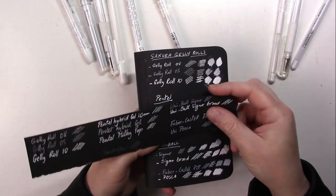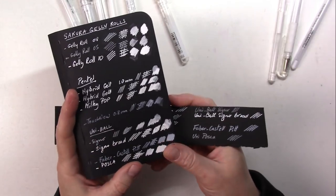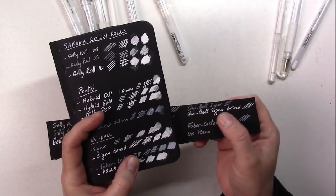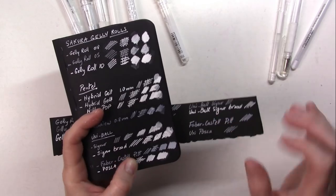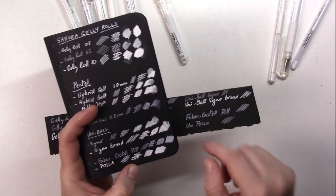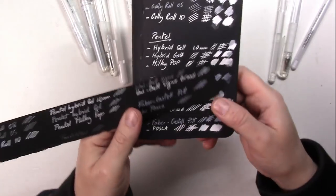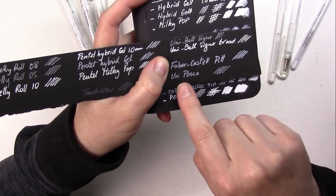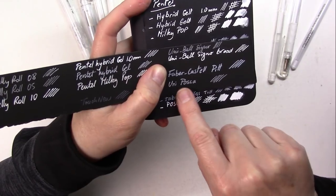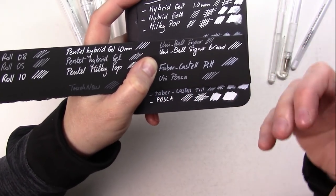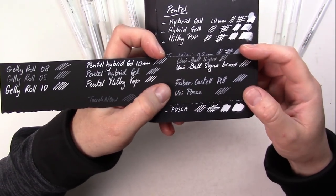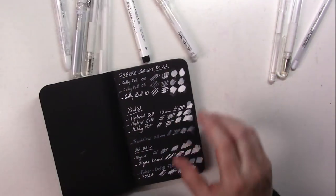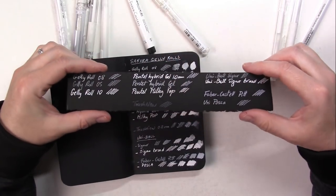For the Uniball, the Signo, it's pretty much the same, although the bigger tip is pretty good. The result is pretty similar to this one. Faber-Castell Pitt is about the same. Uni Posca is the most obvious here, look at that. It's so much brighter on this one than on the Stonehenge paper. It really soaked up the paint into its fibers and so it doesn't show up as much.